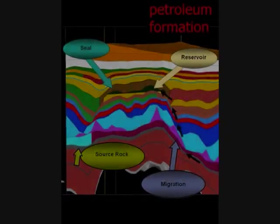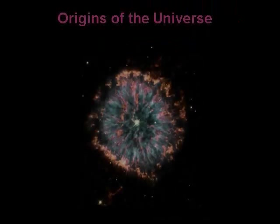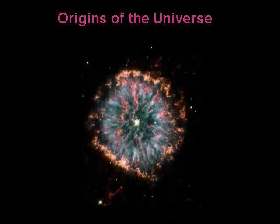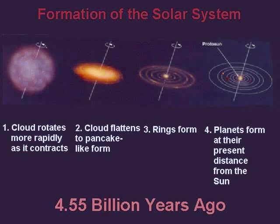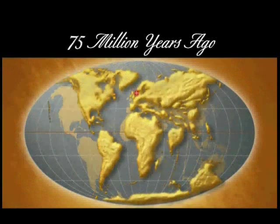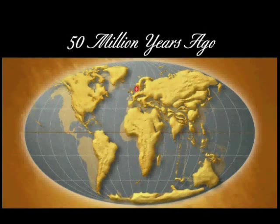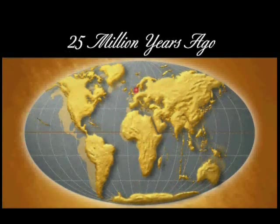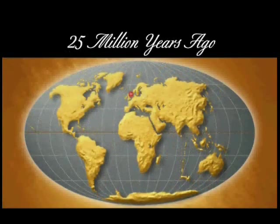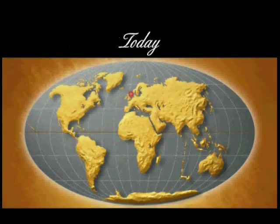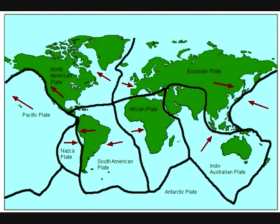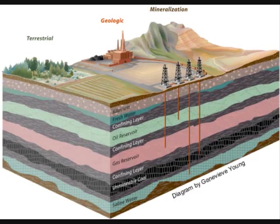To understand where oil and gas come from, we need to understand first how the universe was created and then how the earth was formed from this creation. In discussing the early stages of earth's creation, we will describe the theory of plate tectonics — how plates move, what happens when they move, and the changes these movements create. We need to understand plate tectonic theory because it helps us in our quest to locate oil and gas.